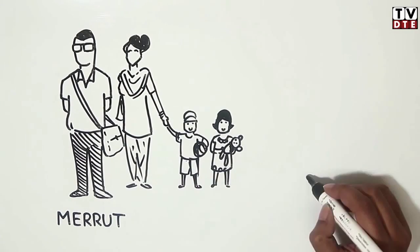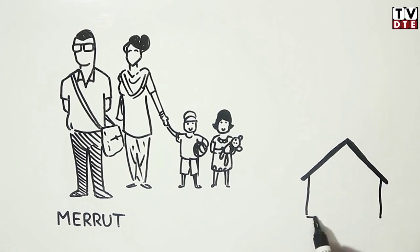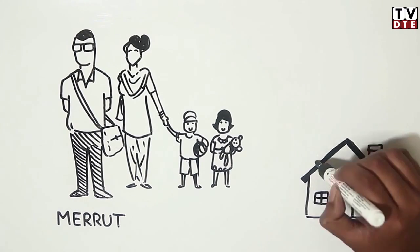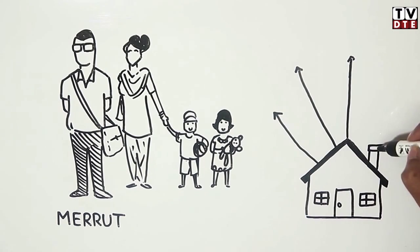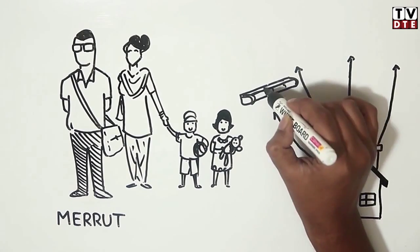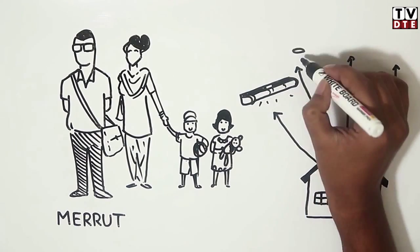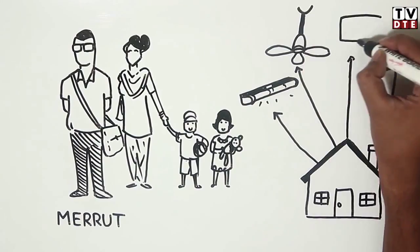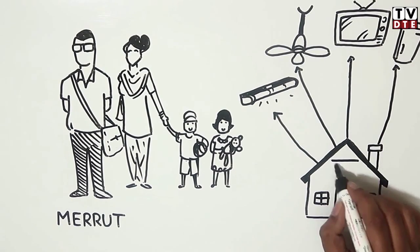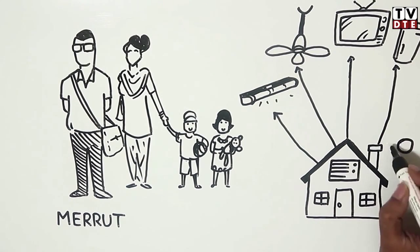Mr. Saxena bought his two-bedroom house in the 1990s, about 20 years ago. Back then, his need for electrical appliances was modest. He bought a few tube lights, a fan for each room, a color television, and a refrigerator. He also installed an air cooler to keep his house cool during the summers.